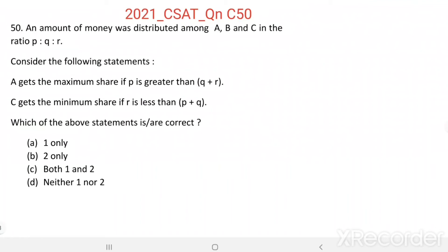Question number 50. An amount of money was distributed among A, B, and C in the ratio P is to Q is to R. Consider the following statements. Statement 1: A gets the maximum share if P is greater than Q plus R. Statement 2: C gets the minimum share if R is less than P plus Q.